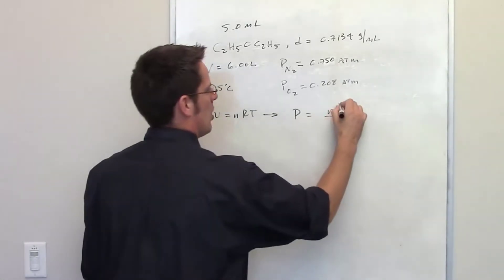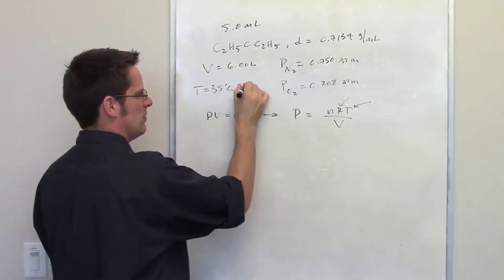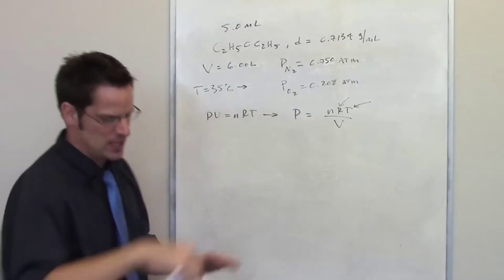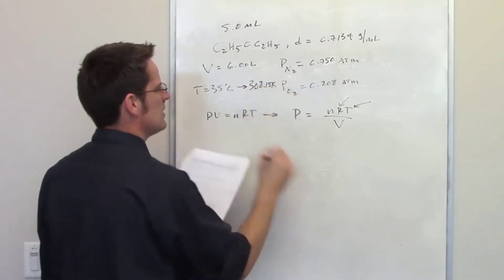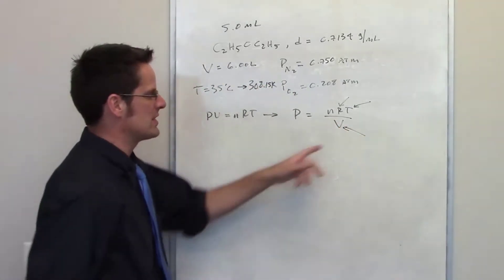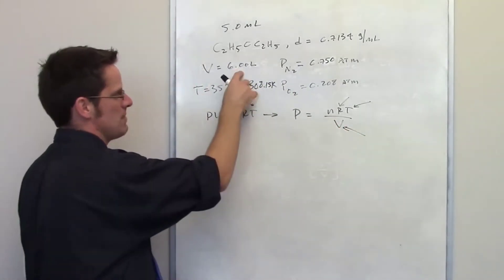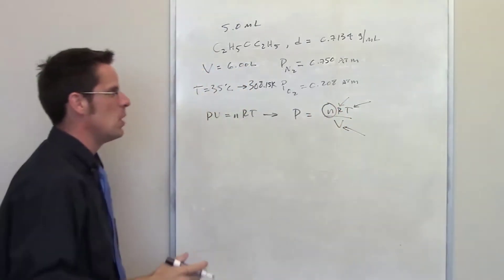We have R the ideal gas constant. We have T which is 35 degrees Celsius. We of course have to convert that to Kelvin by adding 273.15. That equals 308.15 Kelvin. The volume is given to us of the chamber. This is not the volume of the diethyl ether thrown in there. It's the volume of the chamber. The chamber six liters. So we have all these values. The only one that we're lacking is the number of moles.